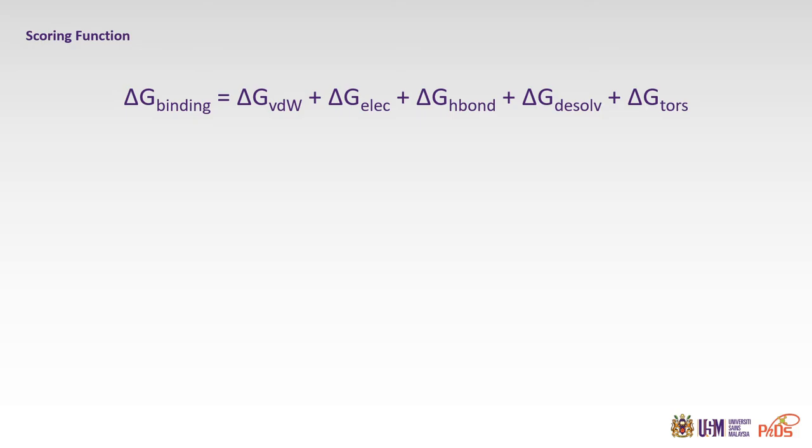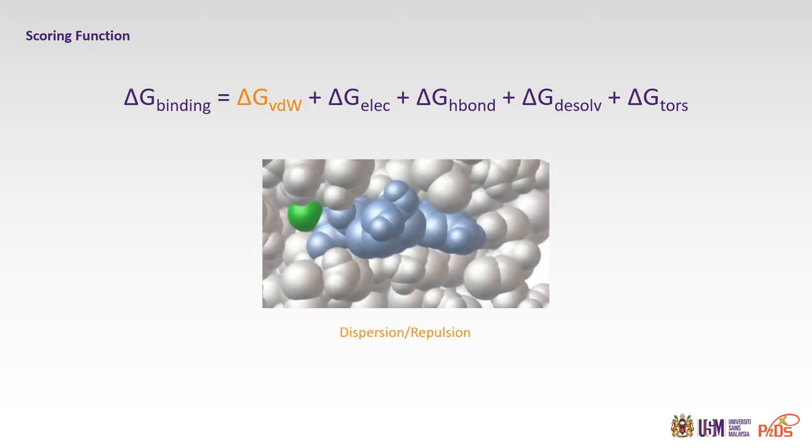Speaking of the scoring function, scoring function is usually represented as ΔG binding. ΔG binding means the energy difference between the bound and the unbound state of both the macromolecule and the small molecule. ΔG binding equals to the energy difference in van der Waals, which represents the dispersion and the repulsion forces.